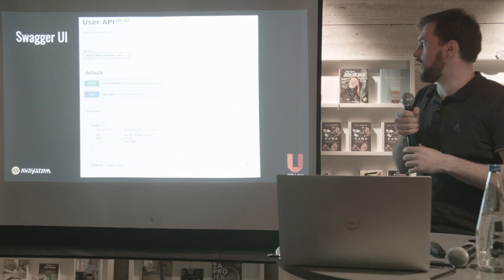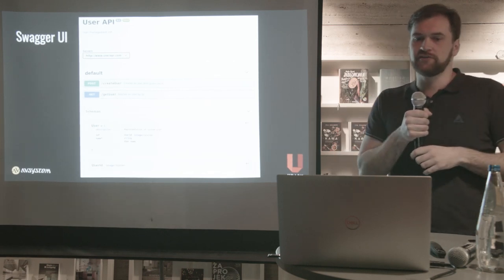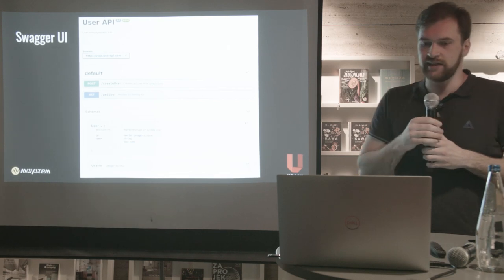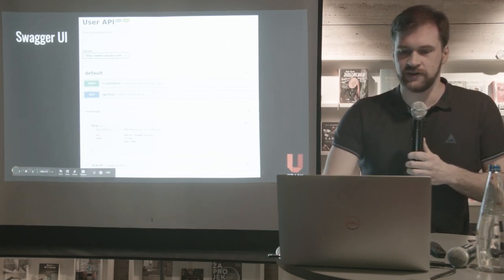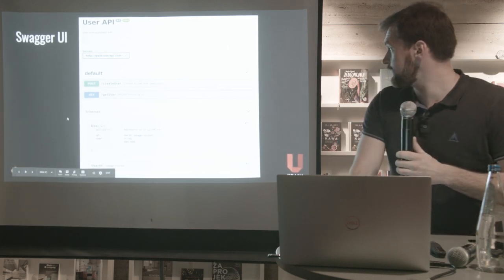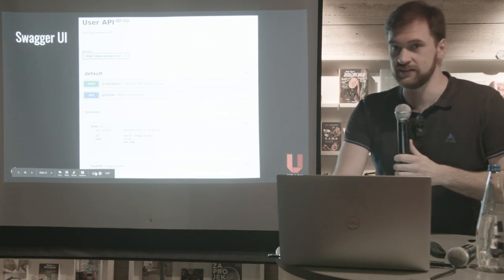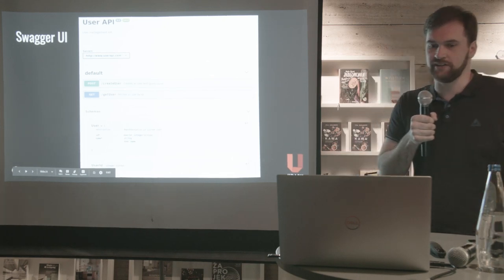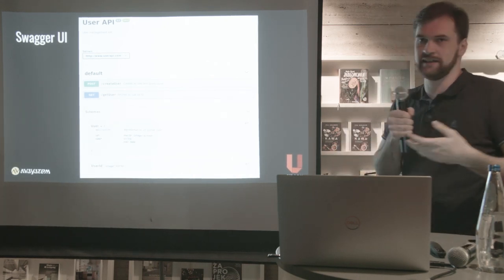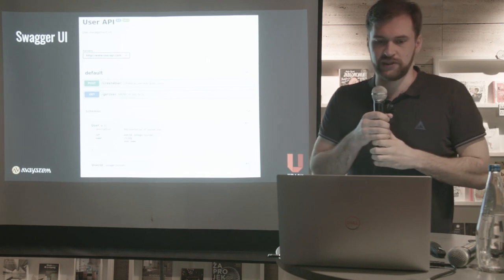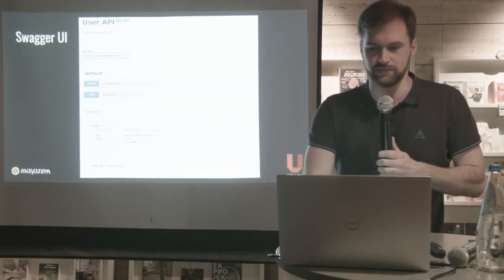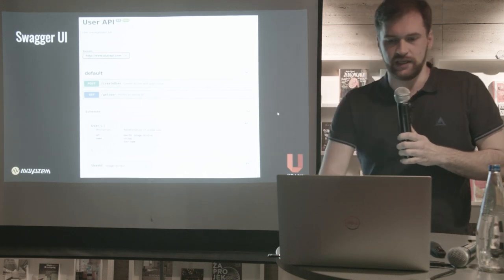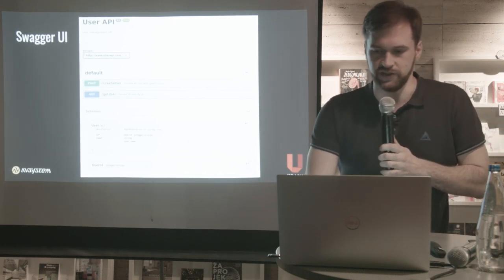Here's an example of how the interactive documentation looks in Swagger UI — it looks pretty nice. I want to point out that in the schemas you can see the UserId schema. This is the benefit of using a wrapper type for UserId — we get it automatically in the documentation, making it much more readable and clear for the user who knows exactly what that parameter is.